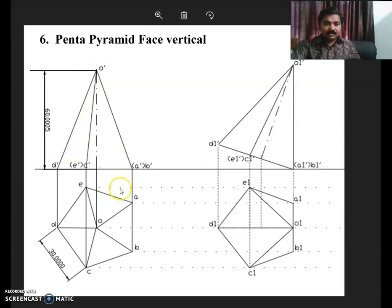Now we are given that one lateral face is perpendicular to HP. That is ABO in this case. ABO has to be perpendicular. The front view of ABO is this one: A dash, B dash, O dash.